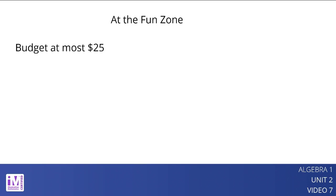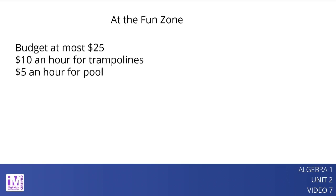Let's look at an example. A family has a budget of at most $25 to spend on activities at the fun zone. It costs $10 an hour to use the trampolines and $5 an hour to use the pool. The family can stay less than 4 hours. What are some combinations of trampoline time and pool time that the family could choose given their constraints? Let t represent the time in hours on the trampolines and p represent the time in hours in the pool.